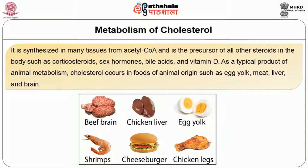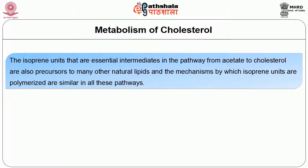As a typical product of animal metabolism, cholesterol occurs in foods of animal origin such as egg yolk, meat, liver, and brain. The isoprene units that are essential intermediates in the pathway from acetate to cholesterol are also precursors to many other natural lipids, and the mechanism by which isoprene units are polymerized is similar in all these pathways.